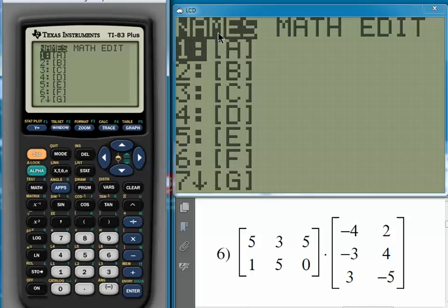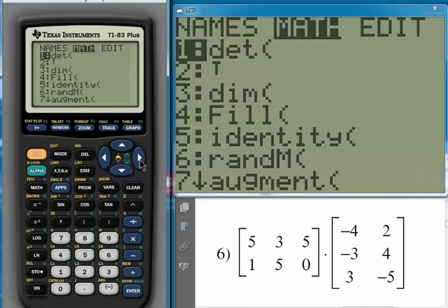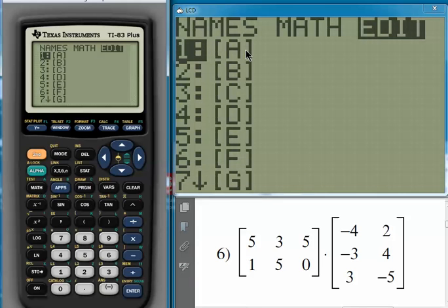There's three submenus: names, math, and edit. We're going to go over here to edit, and we've got several available slots where we can put in matrix entries, but we're going to use A and B. So make sure that A is selected. It should be the first one on the list, and then press Enter.